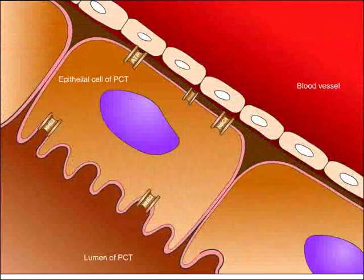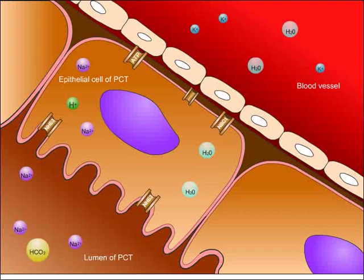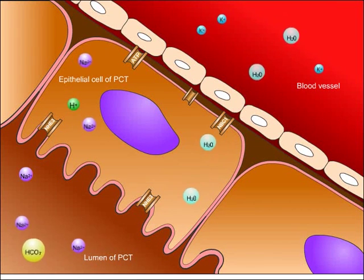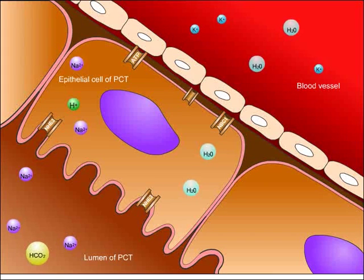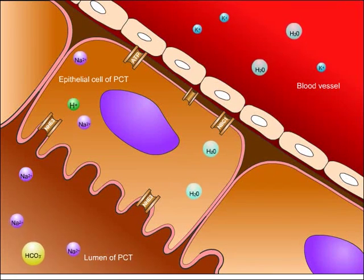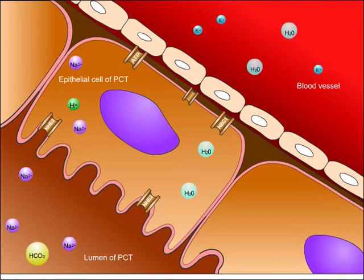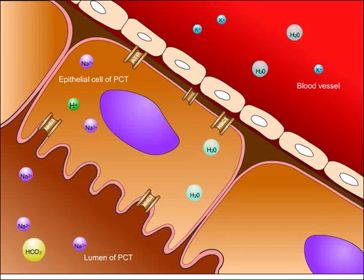Normal ion transport within the proximal tubule will now be reviewed. Here, many of the ions and molecules that are important to the body are reabsorbed, including bicarbonate, sodium, potassium, and chloride, among others.